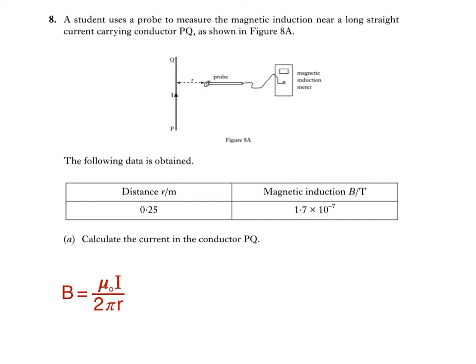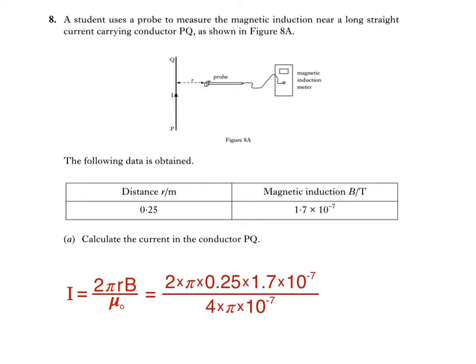I is the current in the conductor, which we're trying to find, and R is the distance from the conductor, which is stated in the table as 0.25 metres. We can make current I the subject of the equation by dividing both sides by mu naught over 2 pi R, which is the same as multiplying by 2 pi R over mu naught. So our equation becomes I is equal to 2 pi R B divided by mu naught. Substituting our values gives us a current of 0.21 amps.